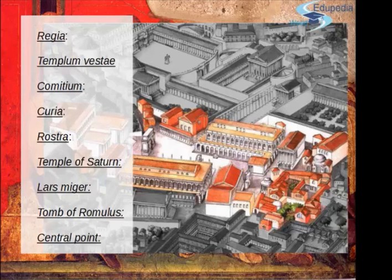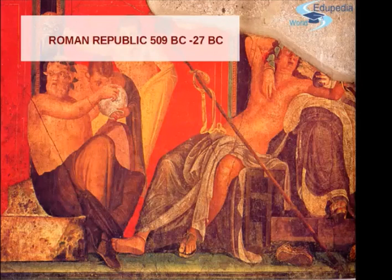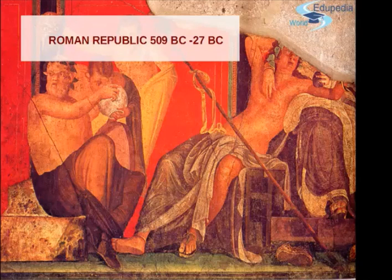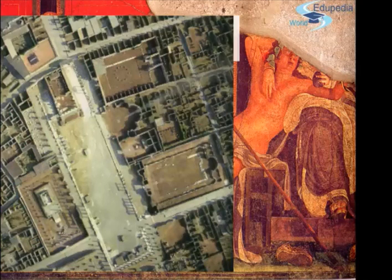There are different types of forum models. The Roman Republic forums go from 509 BC to 27 BC — that is the Roman Republic period. We are going to use Pompeii as an example, because as always, we have all the elements here, so well conserved that we can see all the parts of a Roman Republic forum.